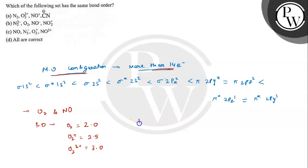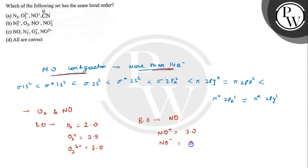Now we will calculate the bond order for nitric oxide type molecules. The bond order for NO⁺ is 3, the bond order for NO⁻ is equal to 2, and the bond order for NO2⁺ will be equal to 2.5.